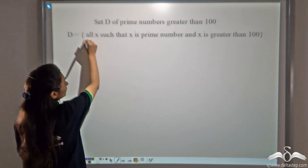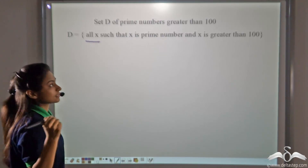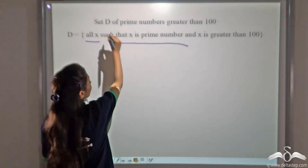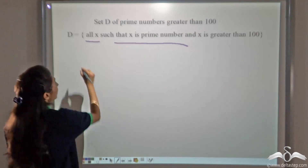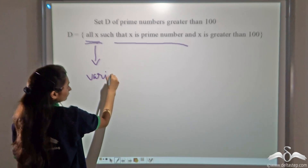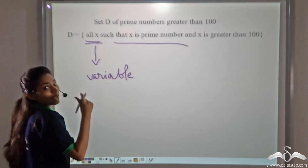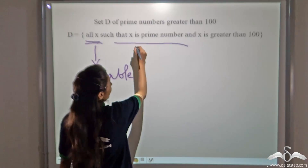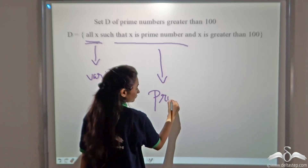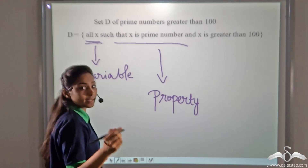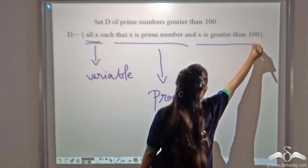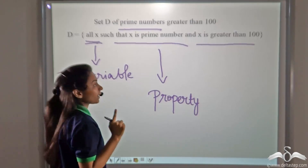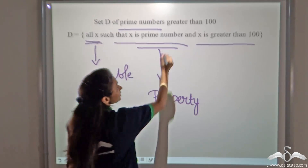So how will we write it? First, we will take the variable x, which will denote any member of the set. After that, followed by the property that each element of the set denotes. So set D of prime numbers greater than 100 can be written as: all x — that is the variable — such that x is a prime number. What is x here? Any variable, that is any member of the set. x is a prime number — this is its property — and x is greater than 100. There are two properties given in the question.